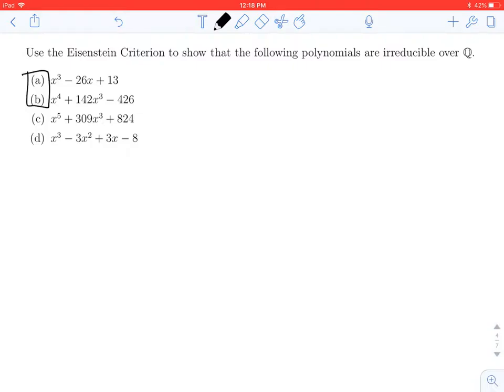In the first one, A, we notice that the prime 13 divides the coefficients. There's the 13, divides the constant term, and it divides the linear term, so it divides negative 26. We also see 13 does not divide 1, which is the leading coefficient in front of the x cubed, and 13 squared does not divide 13.